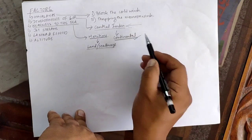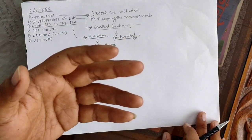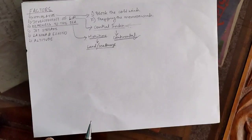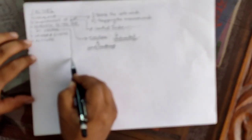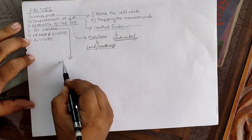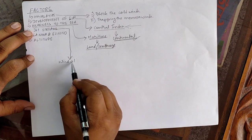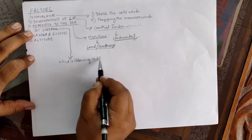The interior part will have continental type of climate since it lies far away from the sea and there is no exchange of air. In this way the climatic conditions differ from the coastal areas to the interior areas.